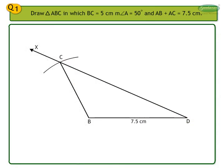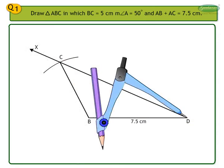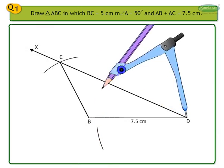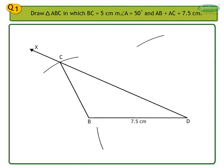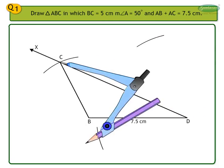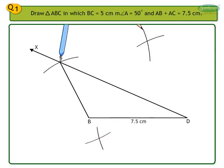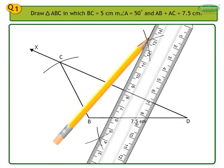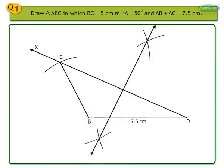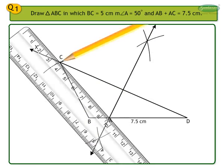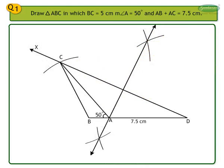Then, draw the perpendicular bisector of segment DC. Take D as center and draw two arcs of more than half the length CD as radius, above and below segment CD. Then with C as center, draw two arcs intersecting the previous arcs with the same radius. Join the points of intersection to get the perpendicular bisector of segment CD. Mark the point of intersection of the perpendicular bisector with segment BD as point A. Next, join A and C. We have constructed the required triangle ABC.